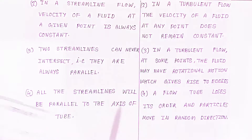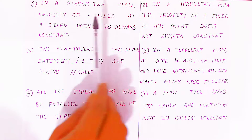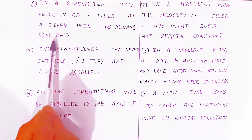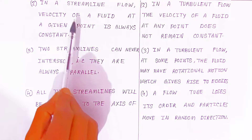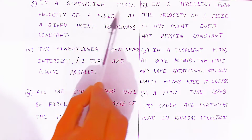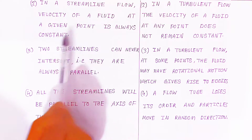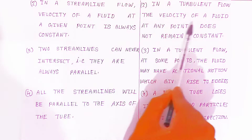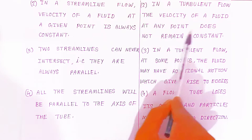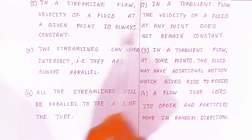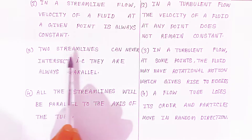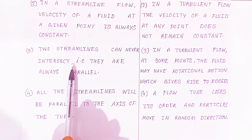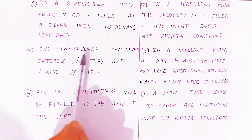In streamline flow, the velocity of fluid at a given point is always constant — it will be constant everywhere. In turbulent flow, the velocity of fluid at any point does not remain constant. Also, two streamlines can never interact — that is, they are always parallel.